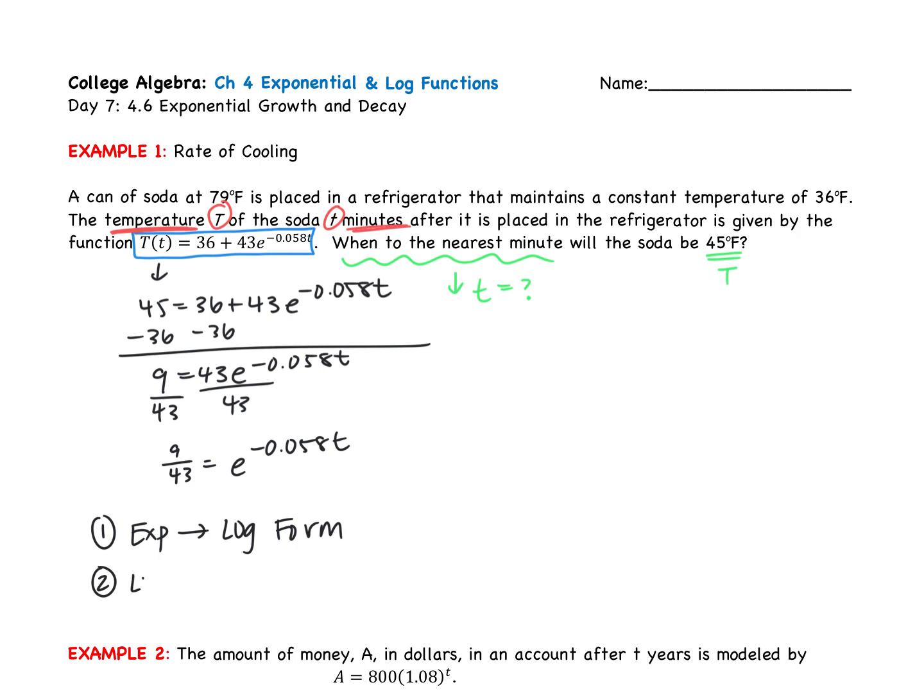Second option, we can take the log of both sides. So log form is going to be a good option if we have a good base. So this will be a good option if the base is 10 or e. So if the base is 10 or e, then switching to log form is going to be best. If not, log of both sides will always work. So in this case, we have a base of e, so we're going to switch forms.